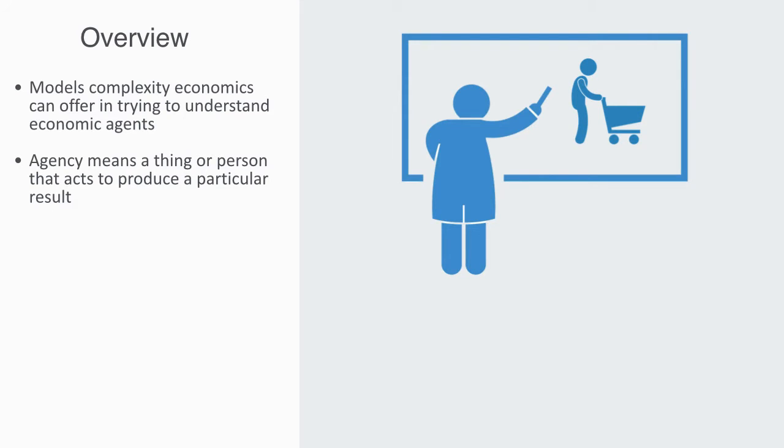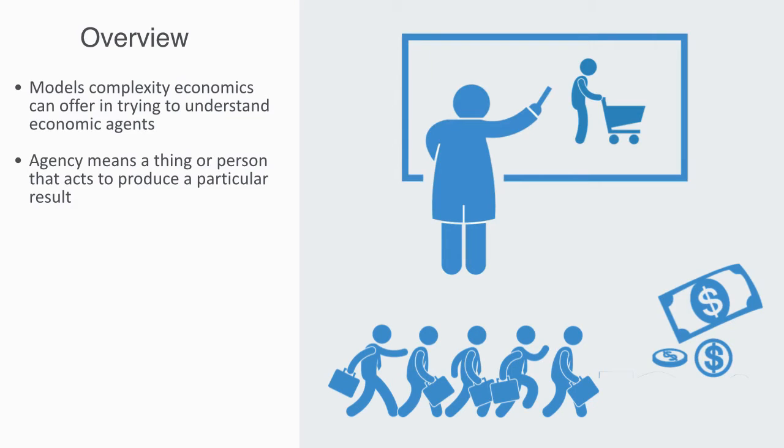which means a thing or person that acts to produce a particular result. The basic premise of economics is that people have some conception of what they value. They will try to be efficient in the expenditure of their resources in order to achieve these valued ends, what is called economizing,